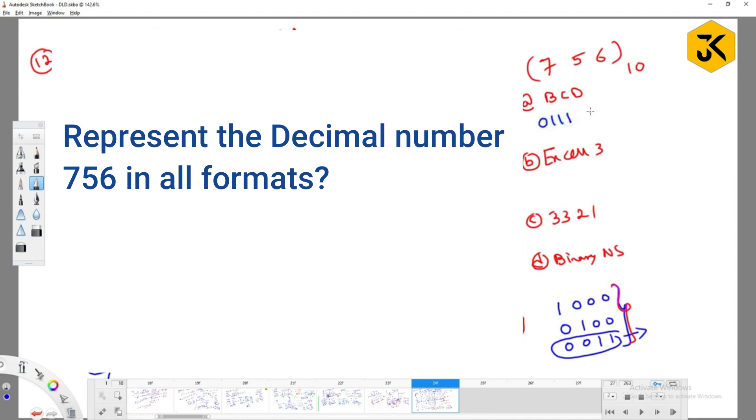0, triple 1, 0, 1, 0, 1, 0, 0, 1, 0. This is BCD of 756. Right.